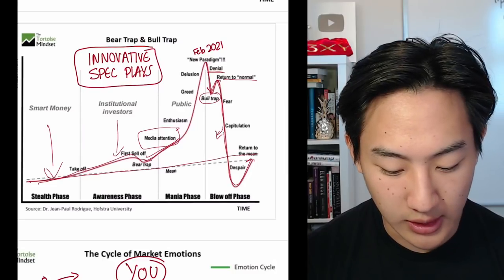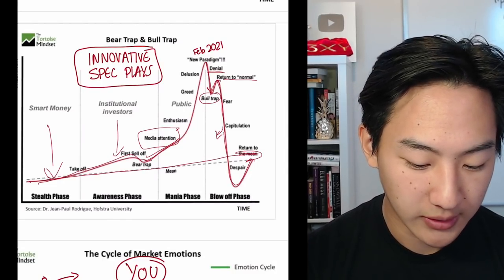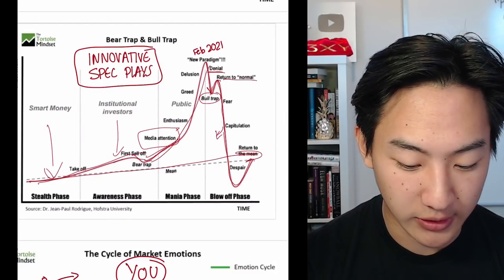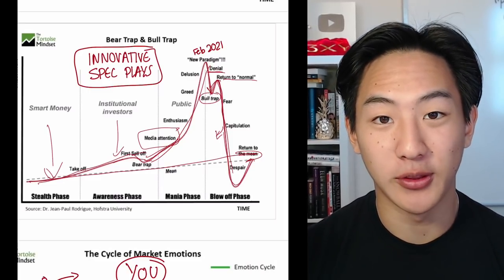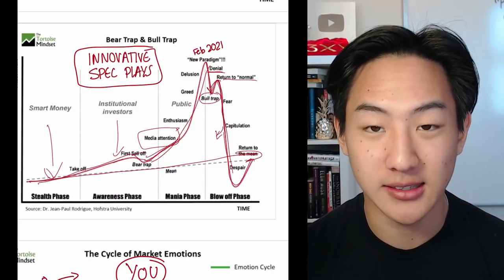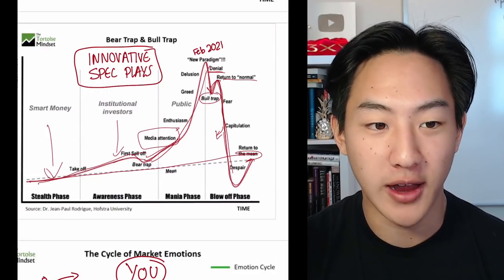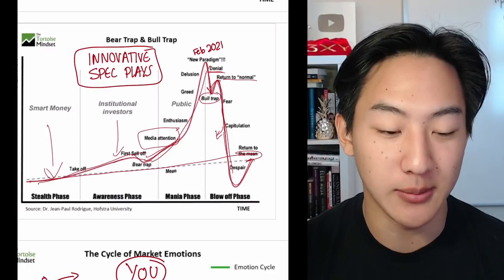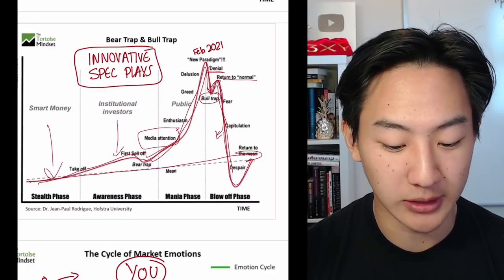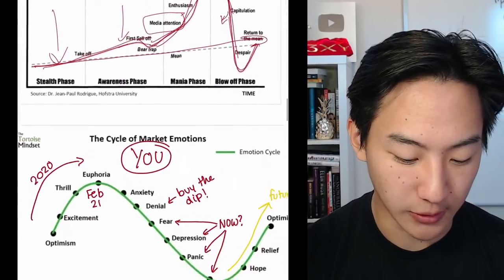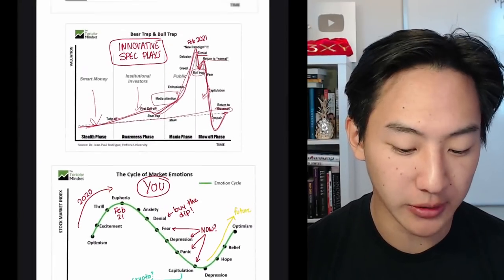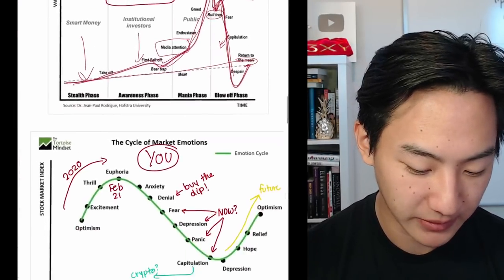So I mean, over the long run, yeah, these things go up. But I think this is a very, very good example of what happened with a lot of spec plays, a lot of penny stocks. You go, I mean, just literally go to Yahoo Finance or Google Finance and pull up a chart of some of these names. I guarantee you they're going to look something like this. Maybe not as sharp, maybe not as dramatic, but yeah, you get the idea.